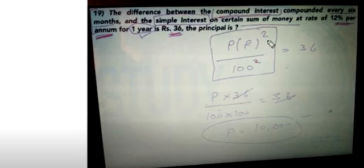The difference between the compound interest compounded every six months and the simple interest on a certain sum of money at a rate of 12% per annum for one year is Rs.36. We need to find the principal.